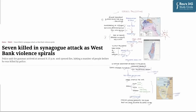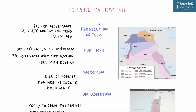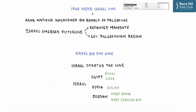Today we will understand the historical context of the Israel-Palestinian conflict, which will enable you to understand all related news articles henceforth. To understand what is happening right now, we must go back in history to the extreme persecution of Jews, which resulted in their migration from Europe and other parts of the world to Palestine. This led to the passage of UN resolutions and two important wars: the 1948 Arab-Israel War and Israel's Six-Day War.